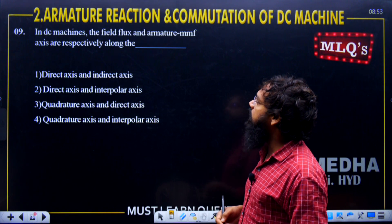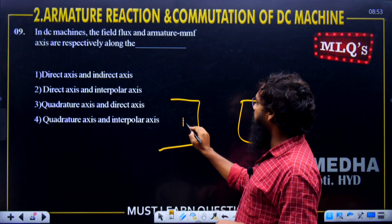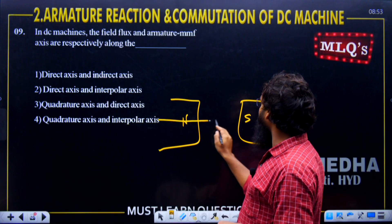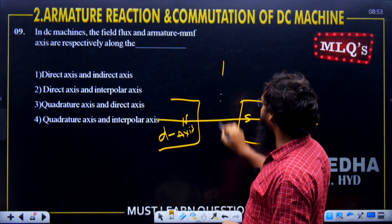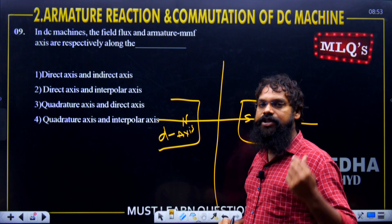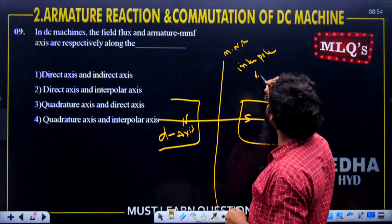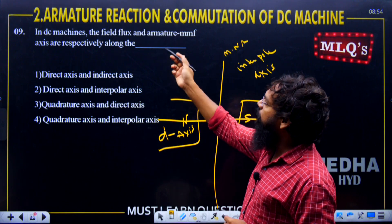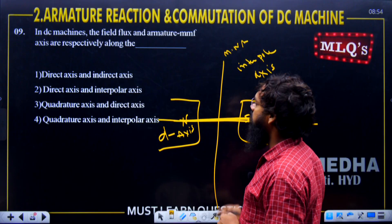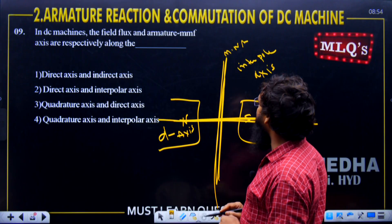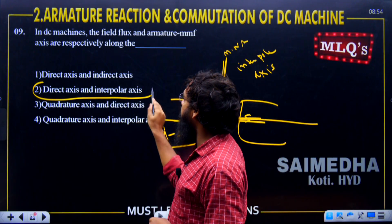In a DC machine, the field flux and armature MMF axis are respectively along: field flux is along the direct axis — on any conductor, maximum induced EMF is on the direct axis — and armature MMF is along the interpole axis. Field flux is along the direct axis and armature flux is along the interpole axis. So the answer is direct axis and interpole axis.